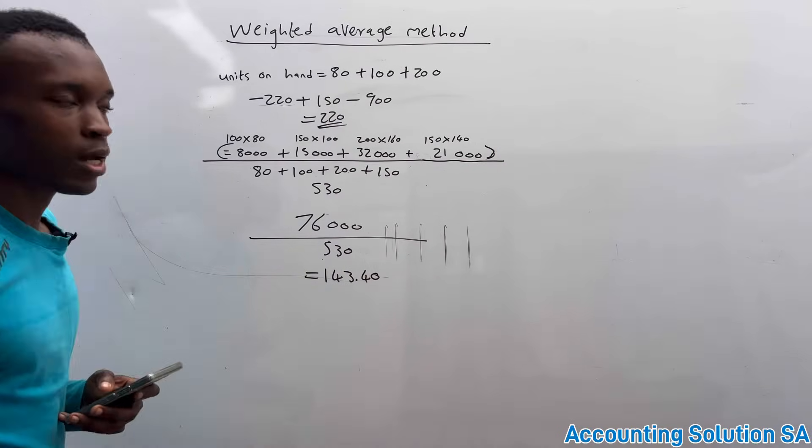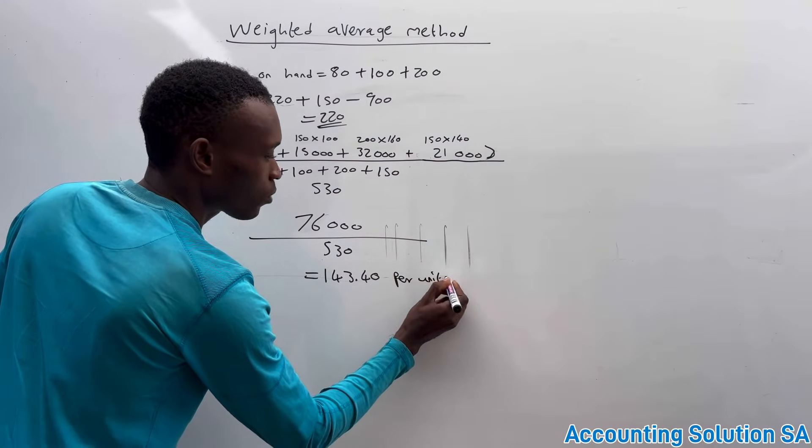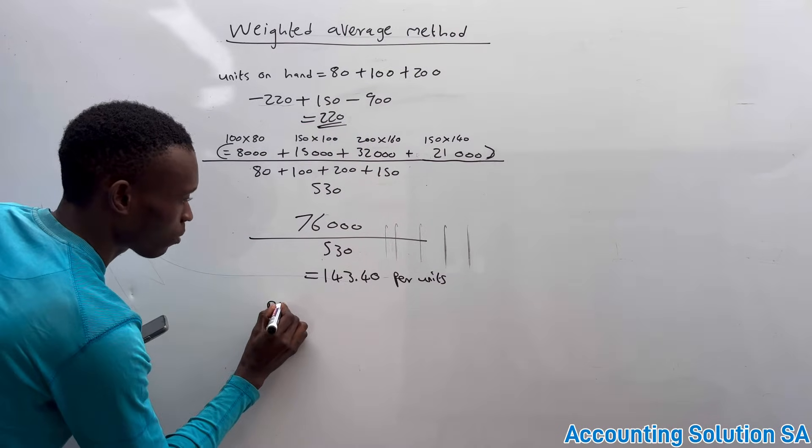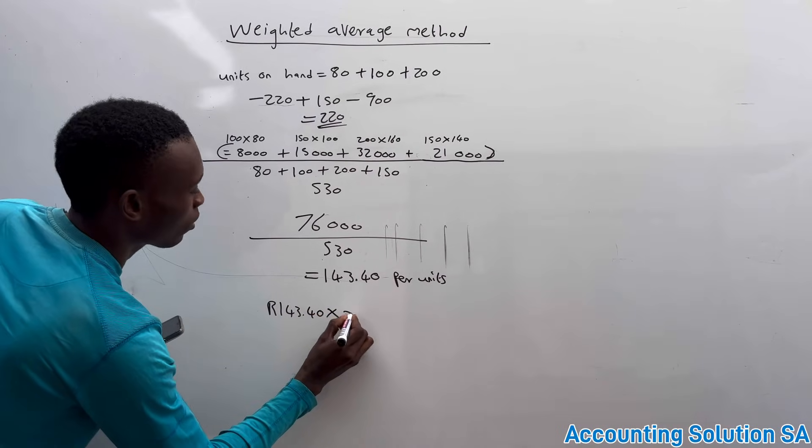Then you're not done. You get the average per unit. Now, in order for you to get total, you must multiply by 220. It's gonna be 143.40 multiply by 220.